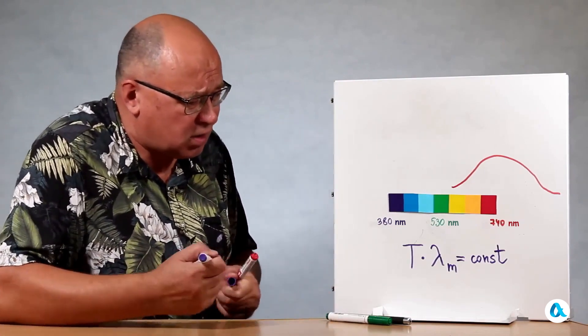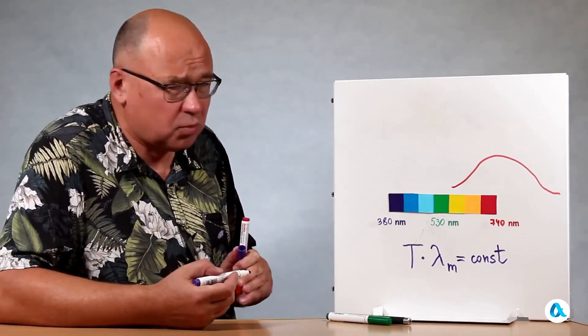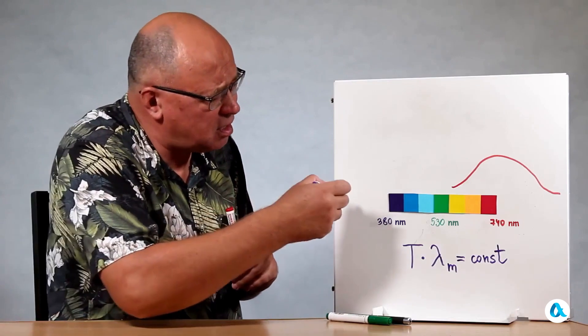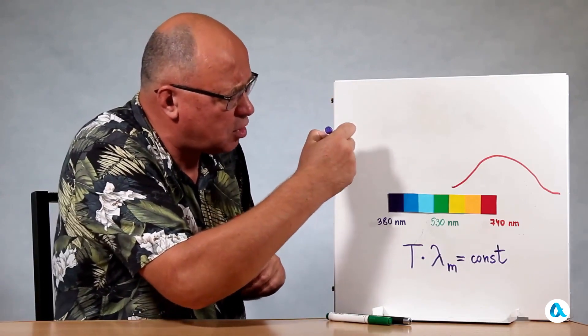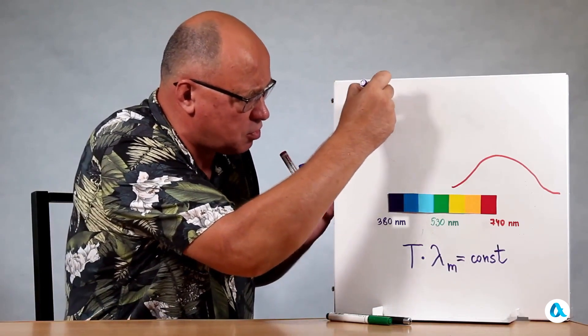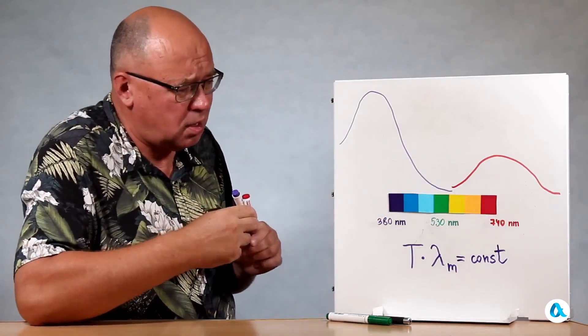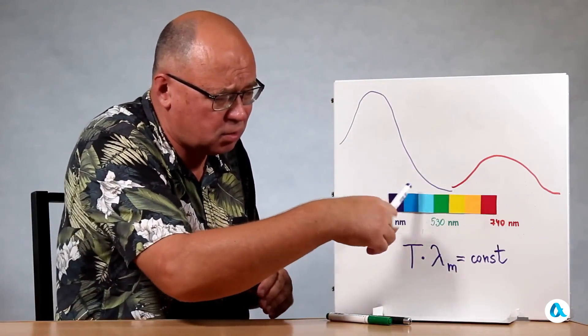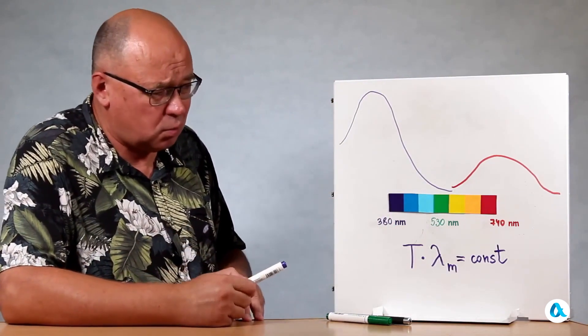And just like that, if a star is hot and its temperature is, for example, 10,000 Kelvin, its maximum is somewhere around here. Well, accordingly, it's already very bright, of course, especially in the red. But that tail falls right here. And again, the maximum is right here in the blue area.